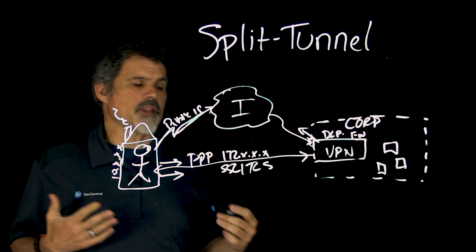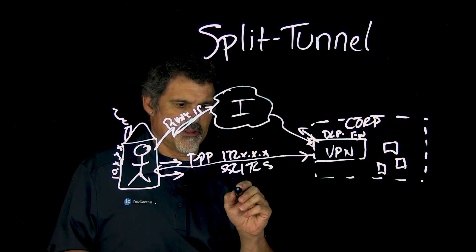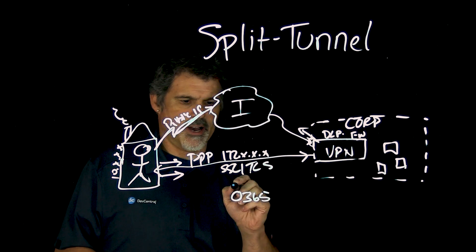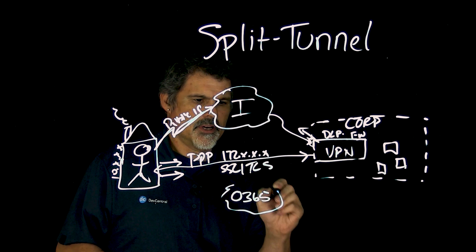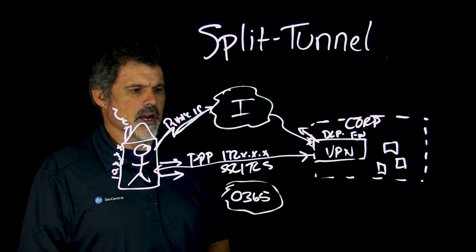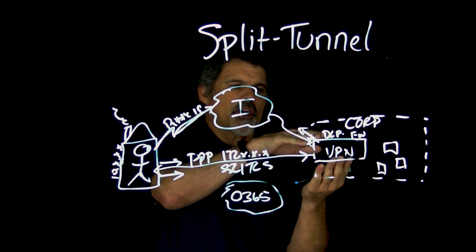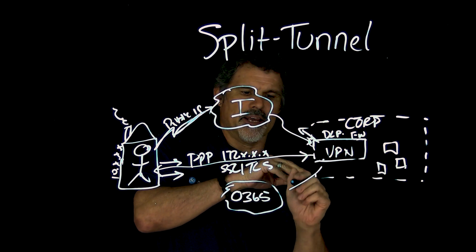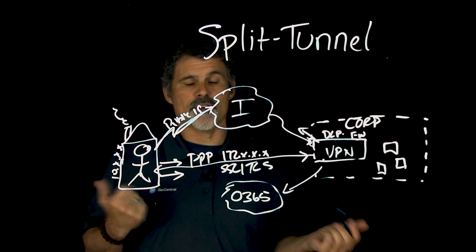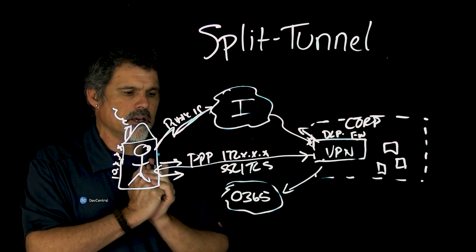And especially with Office 365 — often people would push everything through the VPN to then get to Office 365 — Microsoft is actually suggesting to do split tunneling.